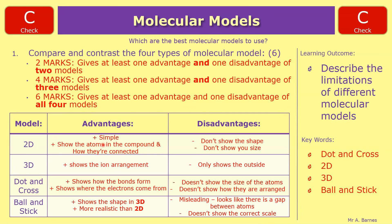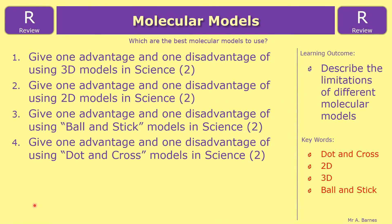So as a recap, if you wanted to get four marks, you needed one of these pluses and one of these minuses for each of the four. Okay, that ends this video then. We'll have a look at the review question, which is: give one advantage and one disadvantage of using 3D models, 2D models, ball and stick, and dot and cross, which should be relatively straightforward for you now.